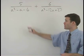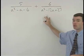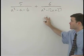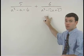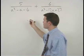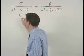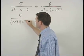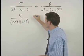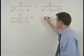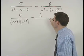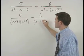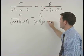To find the common denominator for these two expressions, we must first factor each of the denominators. So we have 5 over (a minus 3)(a plus 2) plus 6 over (a minus 9)(a minus 3).